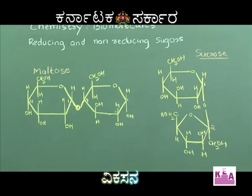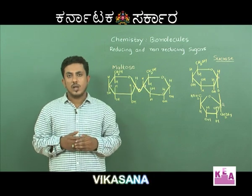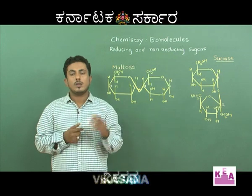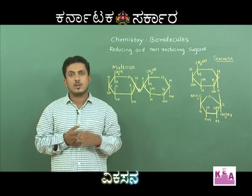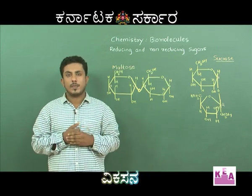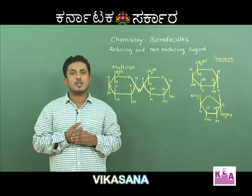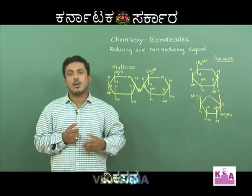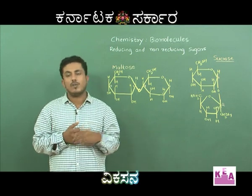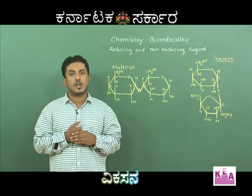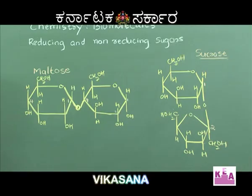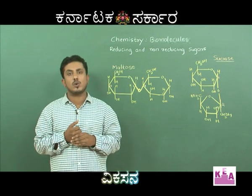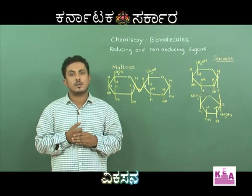Reducing and non-reducing sugars. Sugars which reduce Tollens reagent and Fehling's solution are referred to as reducing sugars. The condition for a sugar to be reducing is that the carbonyl functional group should be free. All monosaccharides are reducing sugars. In the case of disaccharides, if the aldehyde group (if it is aldose) or ketonic group (if it is ketose) is not involved in glycosidic linkage, then that sugar can reduce Tollens reagent or Fehling's solution and is called a reducing sugar.